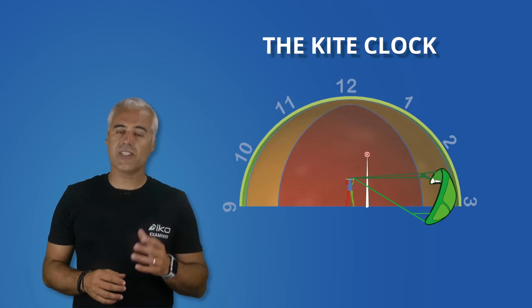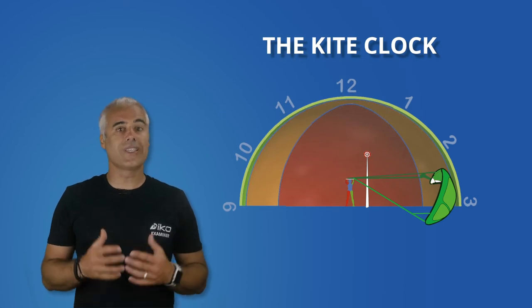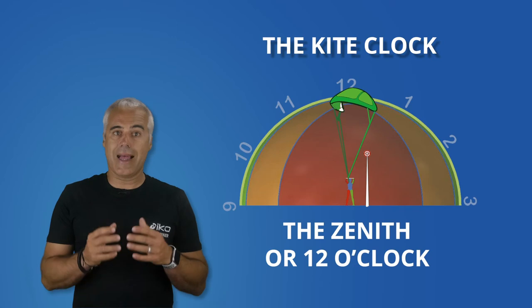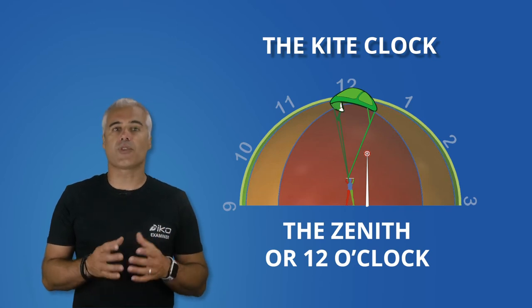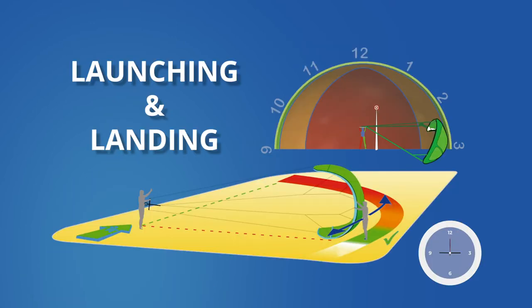This is very useful when teaching, to give a reference point to your student. The zenith is another term for the 12 o'clock position. Launching and landing positions are other terms for the 9 and 3 o'clock positions.